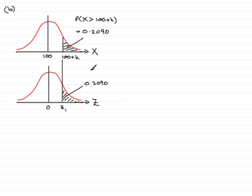So how are we going to find out K? Well, what we know at the moment is that the probability that Z is more than Z1, more than this value here, is 0.2090. And so we're going to have to work backwards in the tables. The tables give us the area to the left of Z1. So that means the probability of Z being less than Z1 is clearly going to be 1 minus 0.2090, and working that out, that's 0.791.